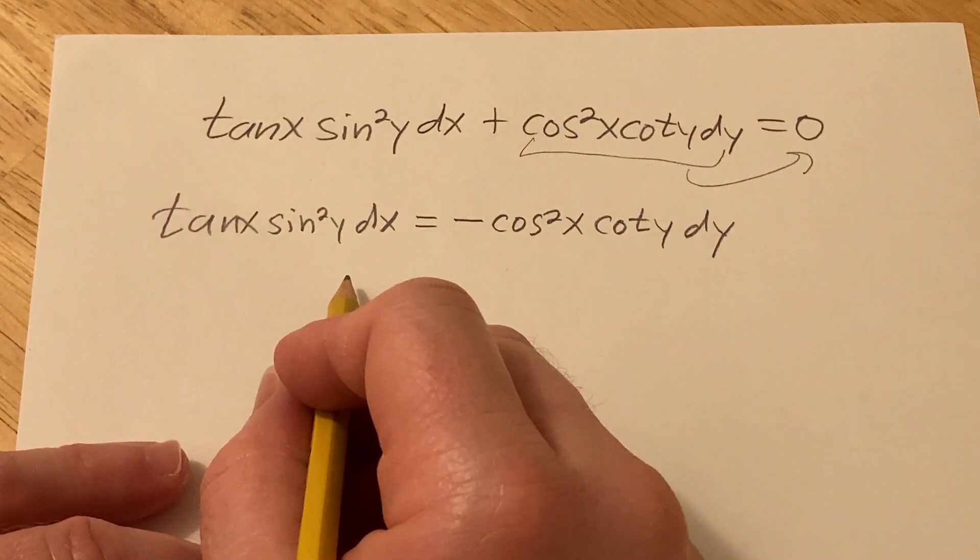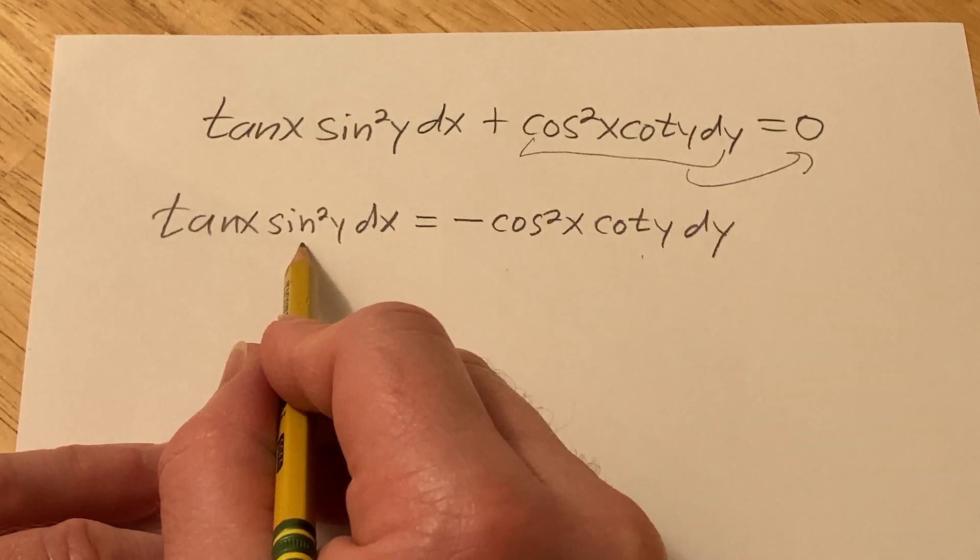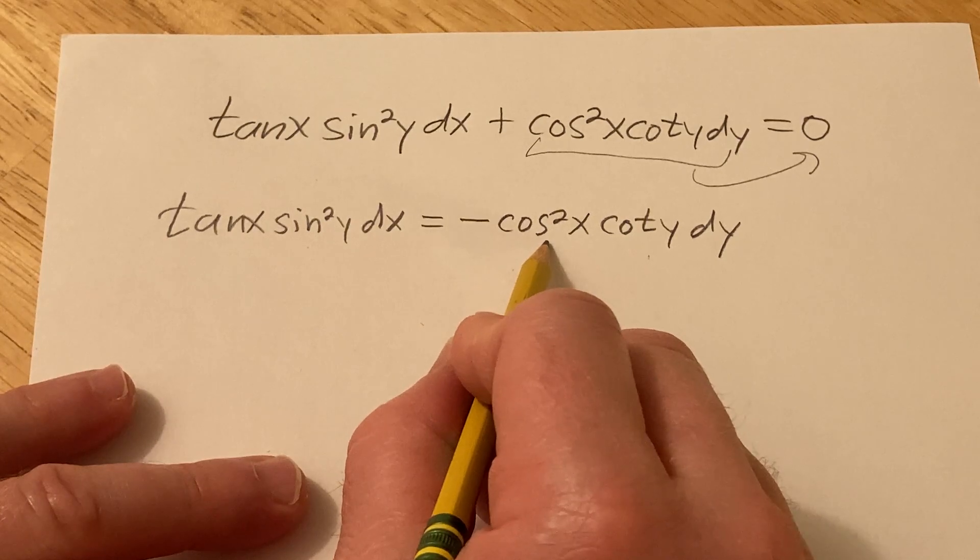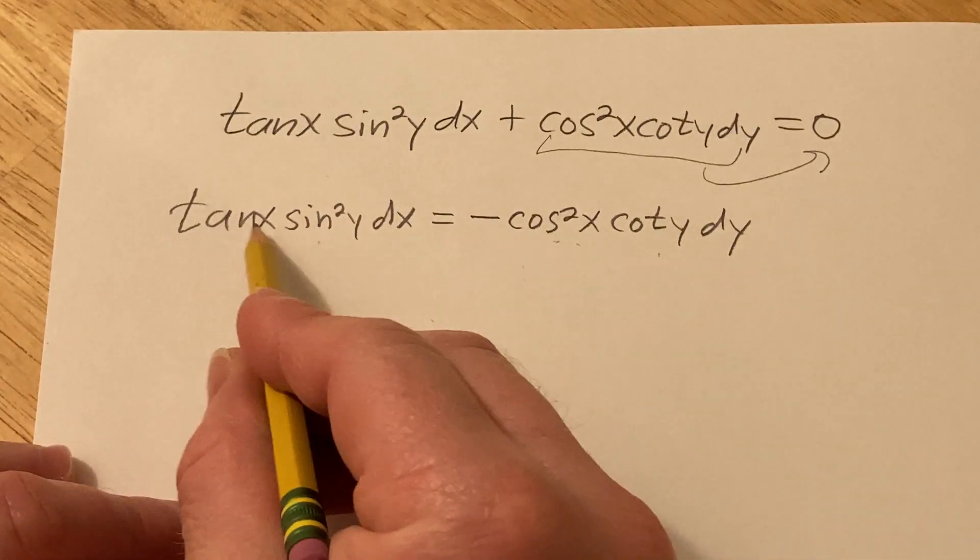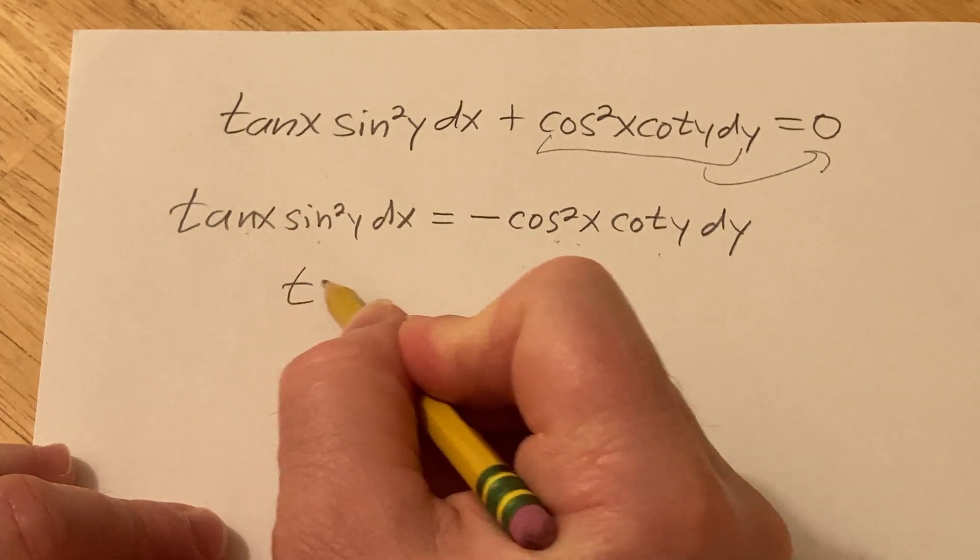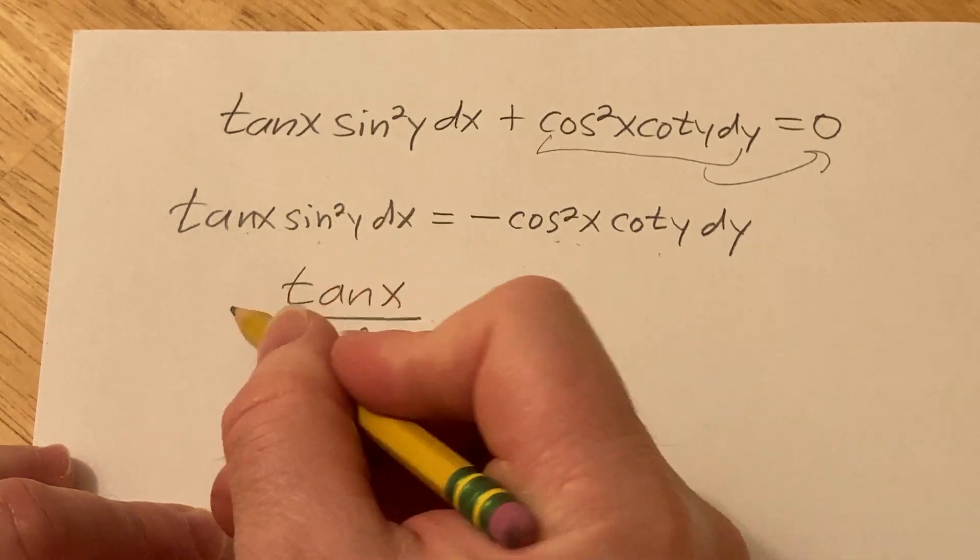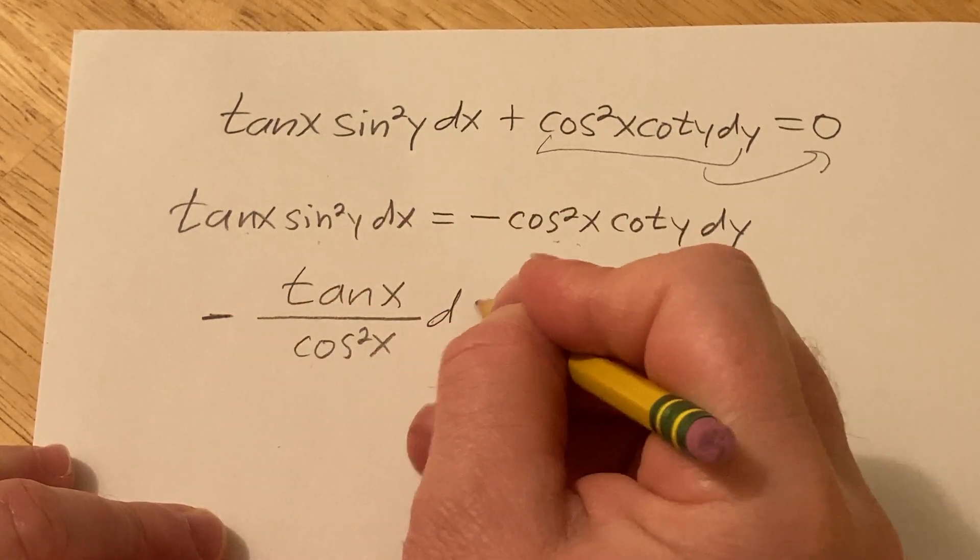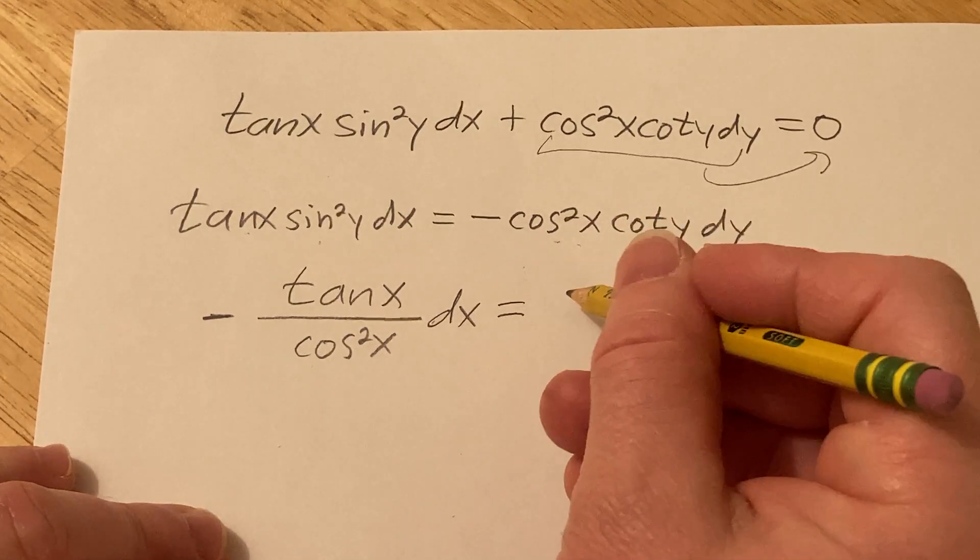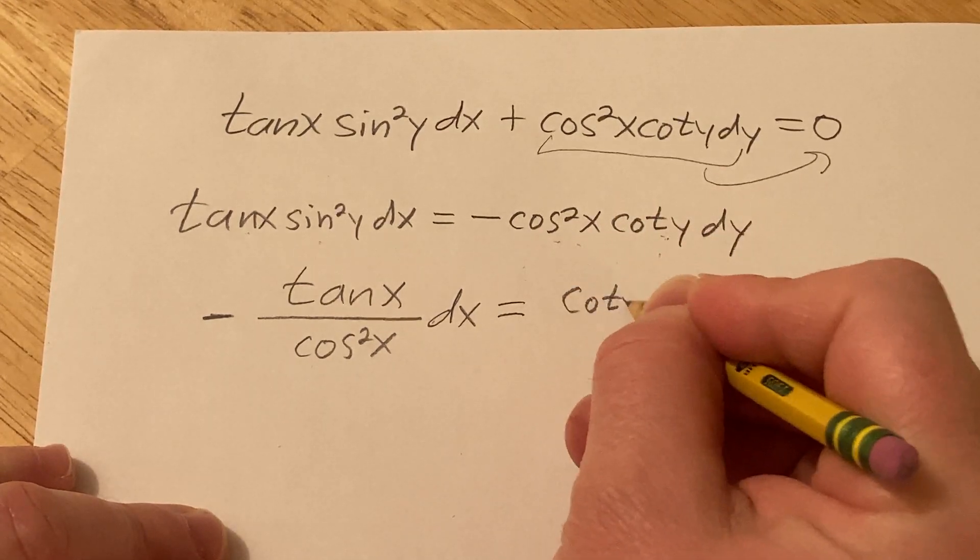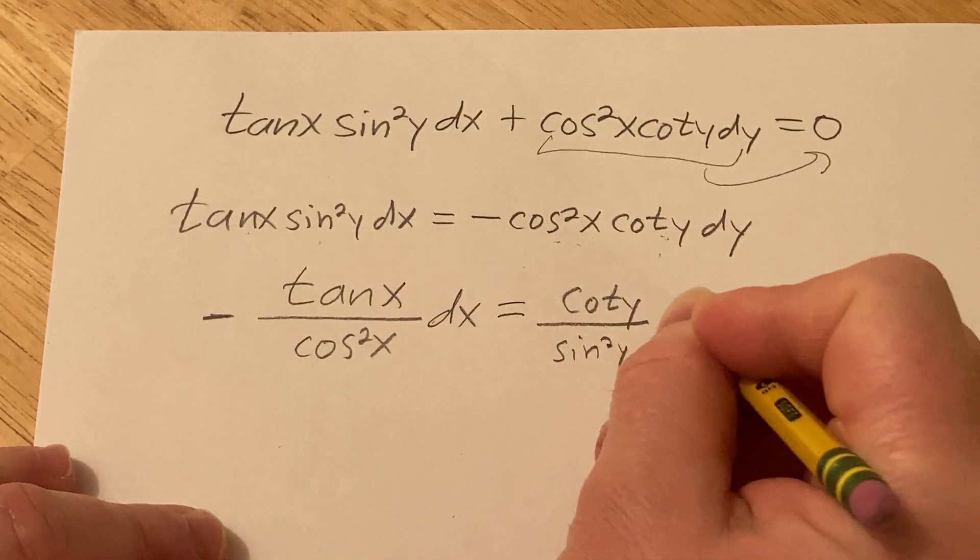All right, so now we need to get only y's over here and only x's here. So I haven't done this yet, so let's see. Let's go ahead and divide by the negative cosine squared and then divide by the sine squared y. So over here we'll have tan x over cosine squared x and then we have a minus and then a dx, and that'll be equal to here we're going to have cotangent y over sine squared y dy.